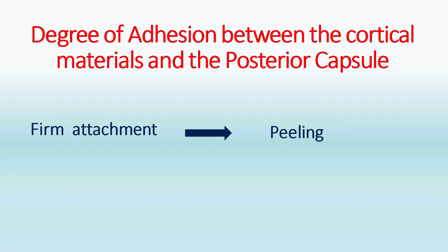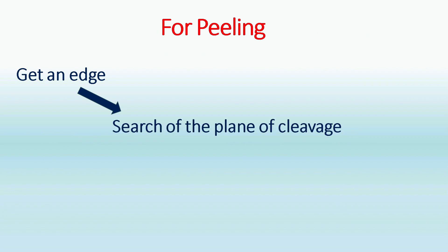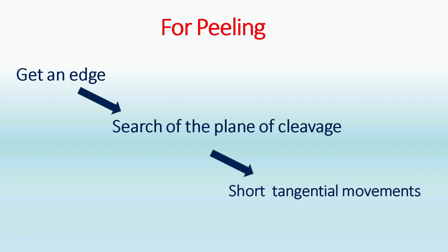For severely adherent opacities, peeling of cortical sheets is necessary. The steps involve creating a free edge of the opacity, identifying the plane of cleavage, and performing short tangential repetitive peeling movements to safely remove the material.